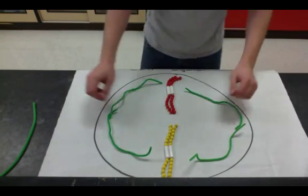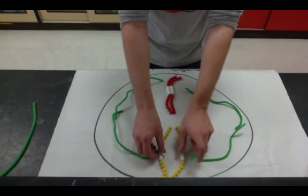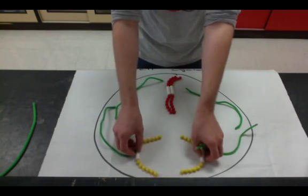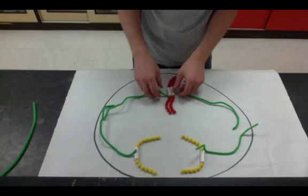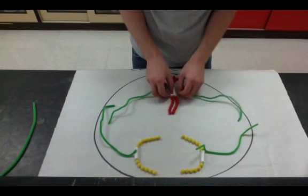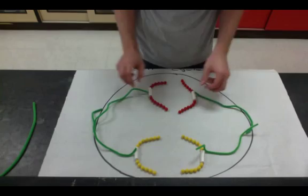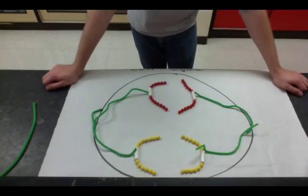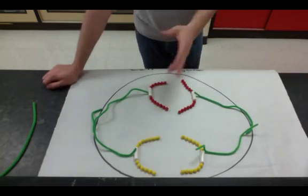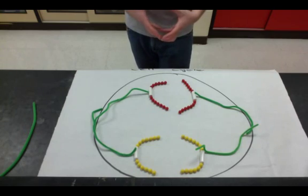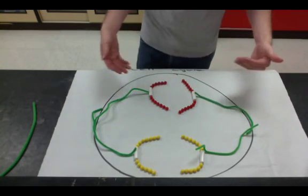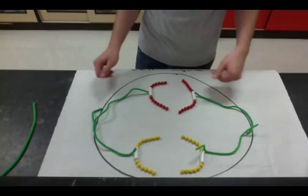In anaphase, these chromosomes are going to pull apart. Those spindle fibers are going to start to contract and pull those chromosomes apart. So in anaphase, we're just simply taking those chromosomes, breaking them apart at the centromere. And they're pulling to each side of the cell.